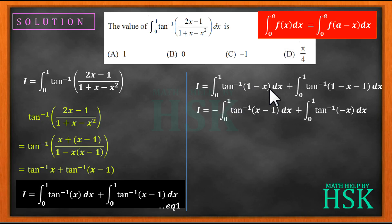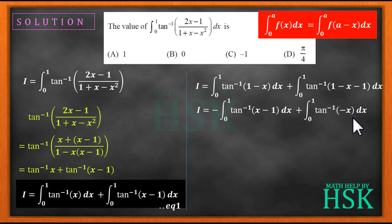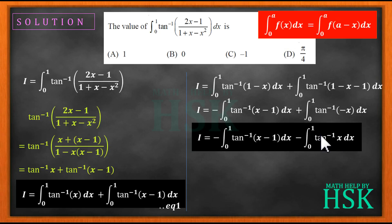Here I have taken the minus sign common, and since tan⁻¹(-x) = -tan⁻¹(x), the 1 and -1 cancel out. So I get minus times ∫tan⁻¹(x-1)dx from 0 to 1. This can be written as -∫tan⁻¹(x)dx from 0 to 1 plus -∫tan⁻¹(x-1)dx from 0 to 1. I mark this as equation number 2.